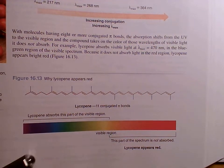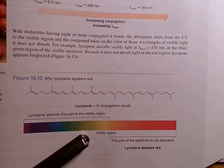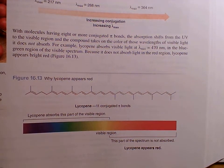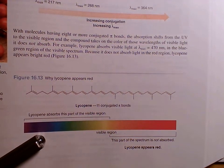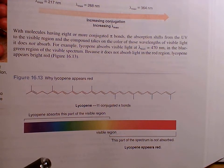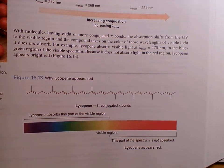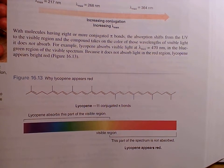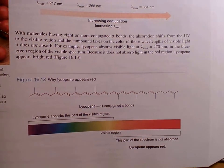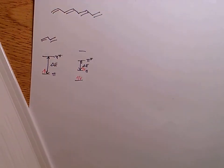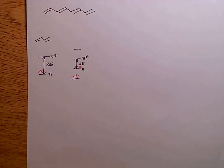When you shine light, visible light, on lycopene, photons in this region will cause the electron to jump from the highest occupied molecular orbital to the lowest unoccupied molecular orbital. It is a pi to pi star jump, just like we saw here, a pi to pi star jump of that electron. And the molecule adds color because that's now in the visible region.